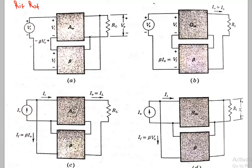Where exactly will RIF lie? It will lie somewhere here. This internal resistance RI — after applying the feedback, will it increase or decrease? Similarly, over here we have a voltage source along with RO. So ROF and RIF are what we want to calculate.